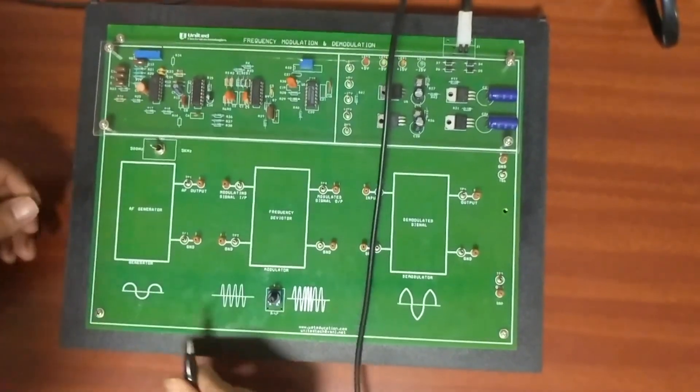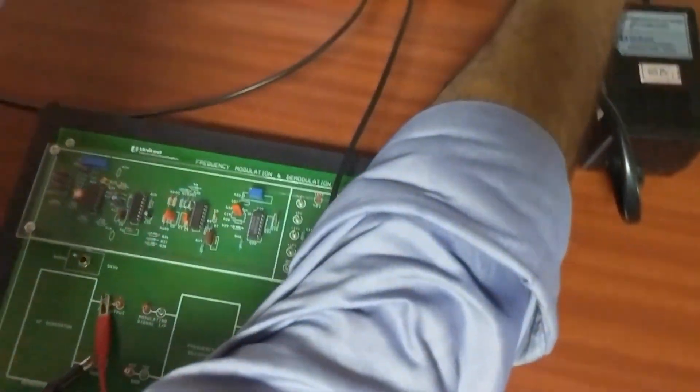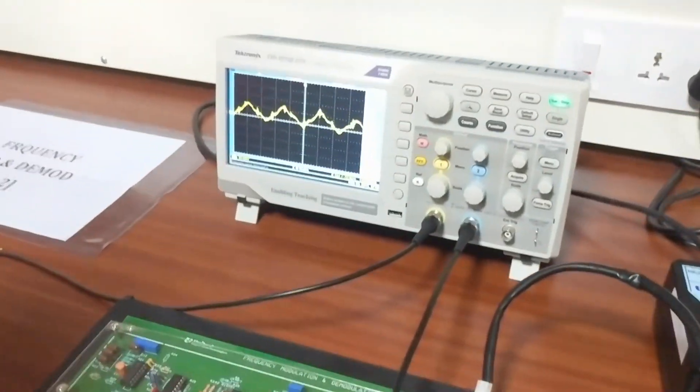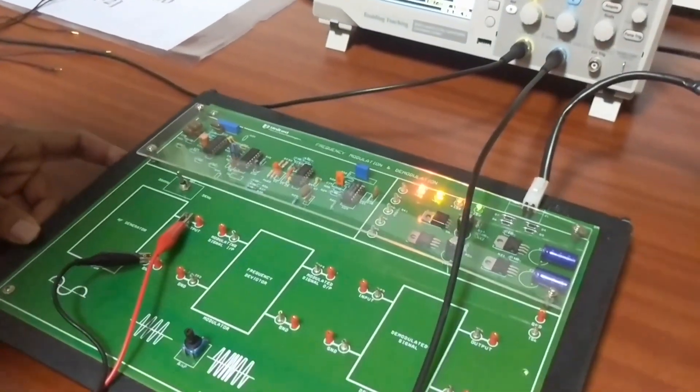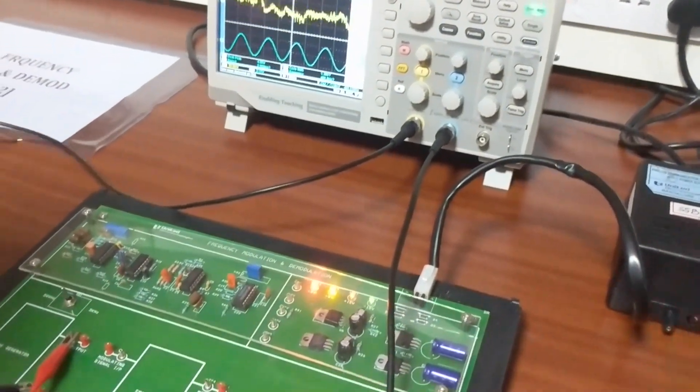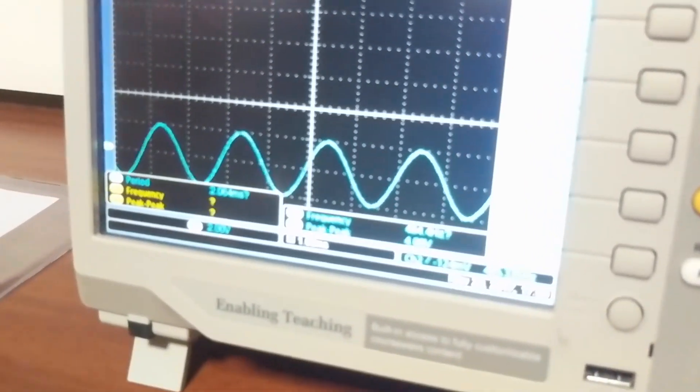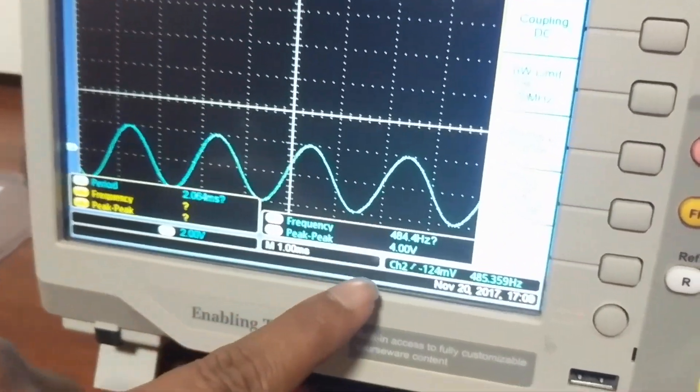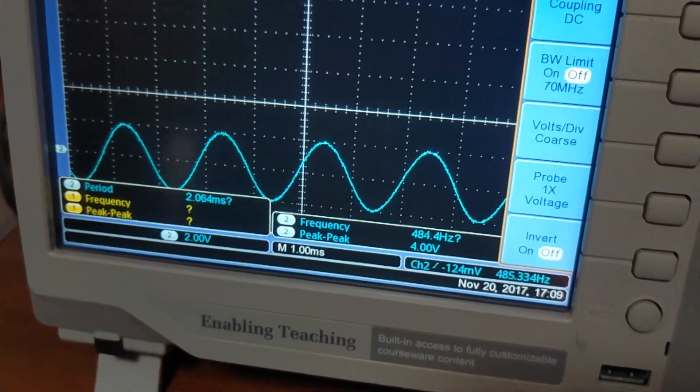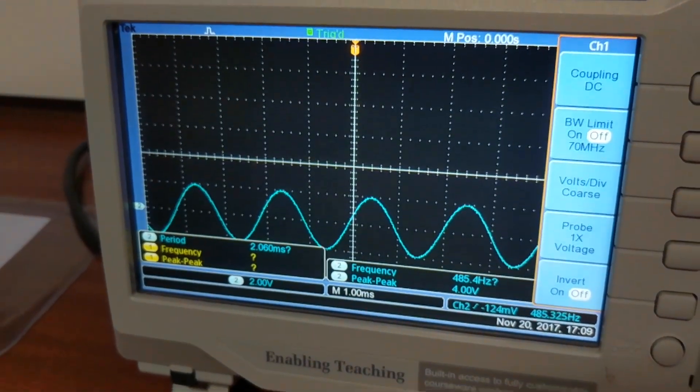So the message signal is of 500 Hz input. The message signal is showing around 485 Hz and the amplitude is 4 volts. It is a fixed set and even the message signal frequency is also fixed.